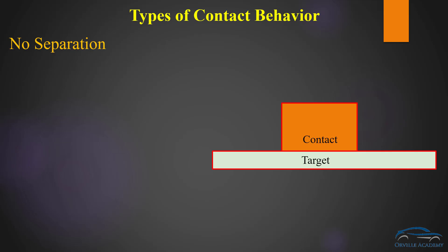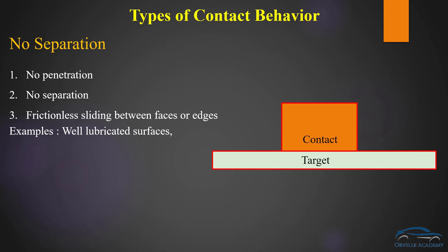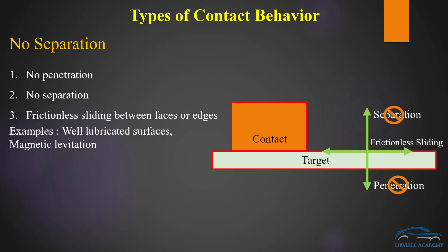Now let us look at the no separation contact. In case of no separation contact there is no penetration allowed and no separation allowed, but frictionless sliding between the faces or edges is allowed. The most typical examples where we can use no separation contact are well-lubricated surfaces and magnetic levitation applications such as train transportation. In the diagram you can see the separation is not allowed and penetration is also not allowed, but frictionless sliding is allowed — the contact and target surfaces can slide onto one another.